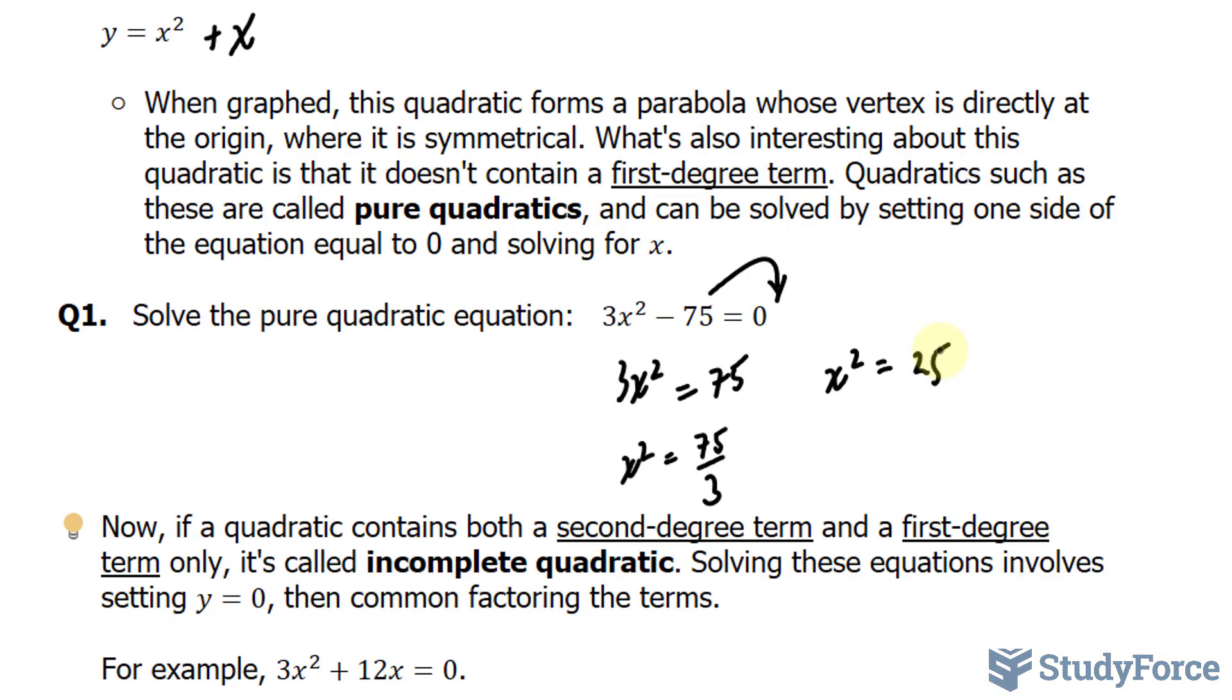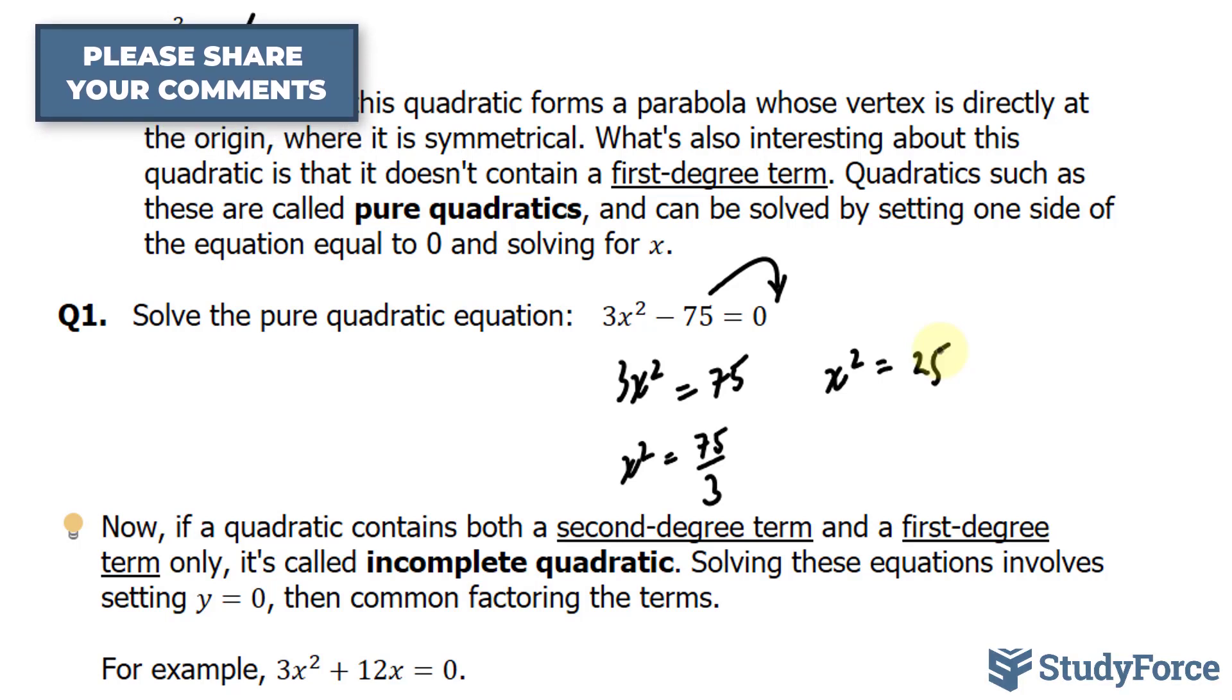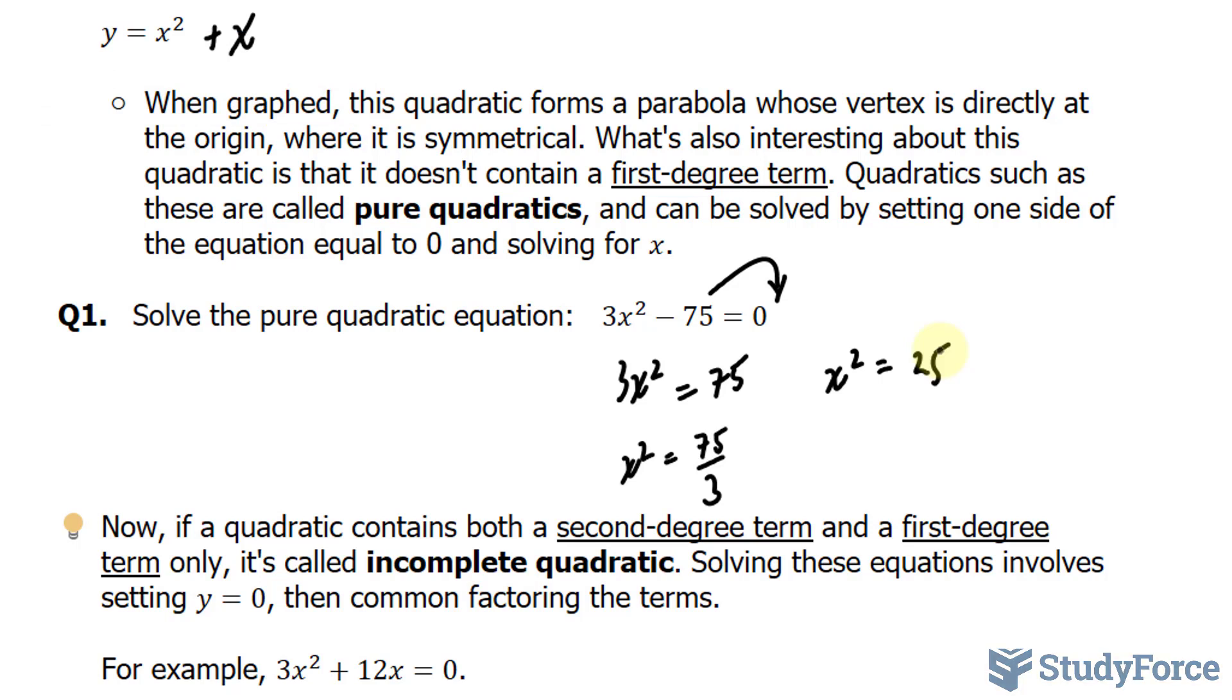And something that's interesting about quadratics is that given that it's a second degree equation, this means that there is a maximum number of solutions of two. We can have up to two solutions. If it's a first degree equation, you have a maximum of one solution. And that was evident with all the linear equations that we've solved in the past.